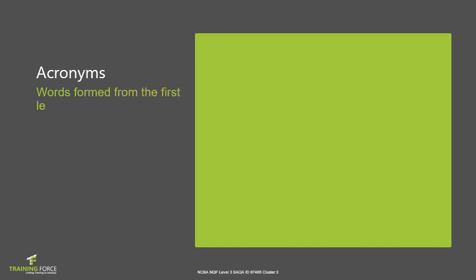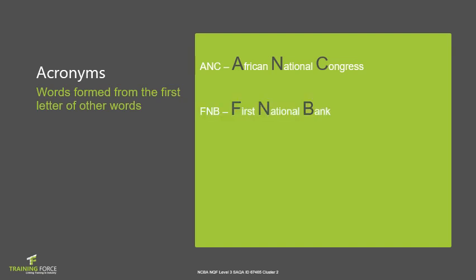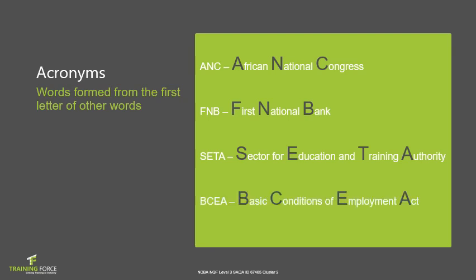Acronyms are words formed from the first letters of other words. For example: ANC stands for African National Congress, FNB for First National Bank, CETA for Sector for Education and Training Authority, and BCEA for Basic Conditions of Employment Act. It is also important to know what an acronym stands for so that when talking to other people, you can explain it if they are not aware of it or don't come from the same language background.